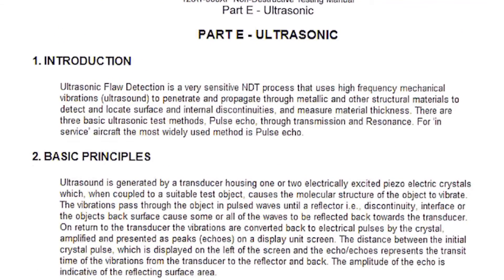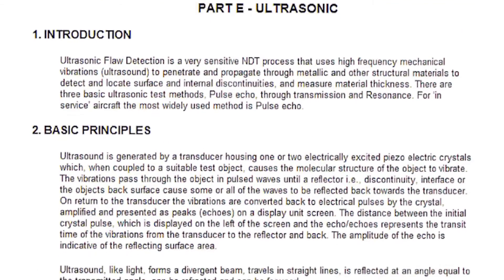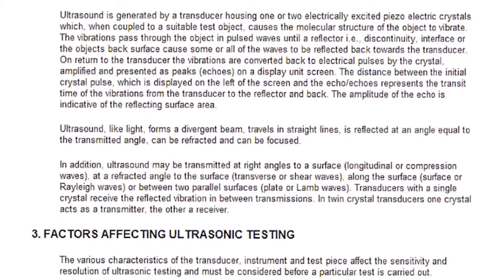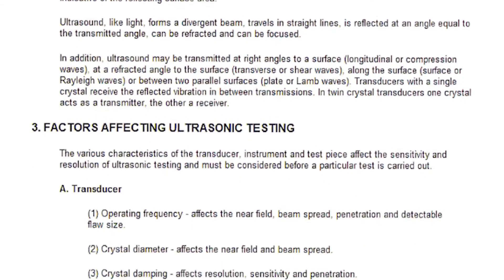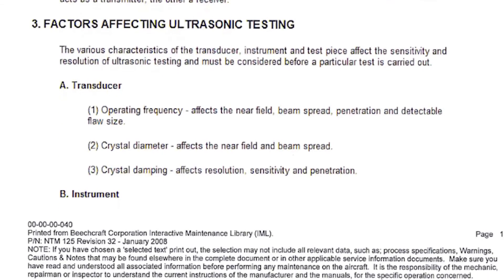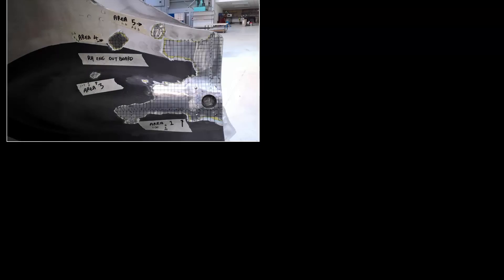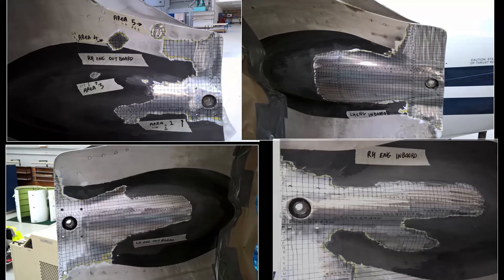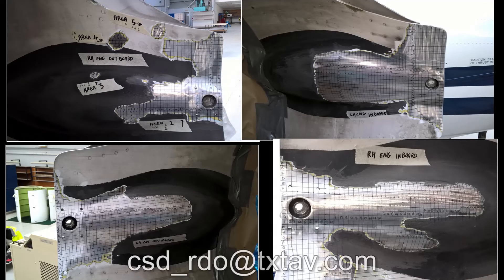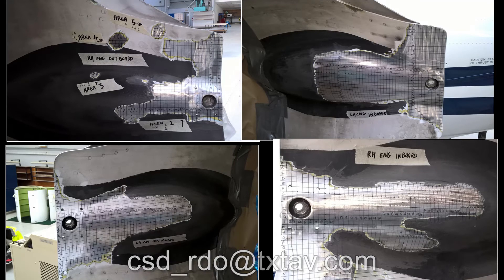4. Use ultrasonic NDT technique in accordance with the non-destructive testing manual NTM 125 general techniques to determine remaining material thickness. Report remaining material thickness along with after-blend photos to csd_rdo@txtav.com for further assessment.